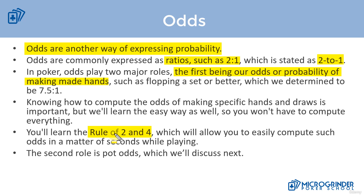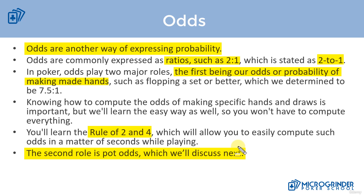The second role odds play, and this is very important, is in determining our pot odds. I'm not going to go further on that here because we're going to talk about pot odds in the next video. Just understand that when talking about probability, we typically look at it from an odds perspective in gambling, but we can also look at it from a percentage perspective — which is what I recommend. It plays two roles: the probability of making a specific hand, and determining our pot odds.